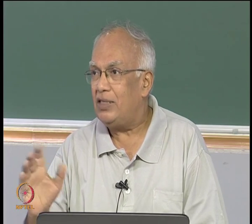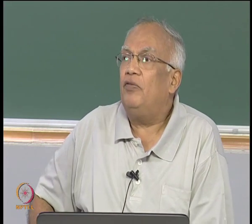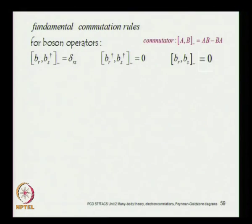In the first quantization formalism, we have the statistics in the symmetry of the wave function. As opposed to putting the statistics in the symmetry of the wave function, we now put it in the properties of the operators — how these operators commute. With regard to the creation operators b-dagger and the destruction operators b, we have these fundamental commutation rules, which contain all information about the statistics of the many-body system.